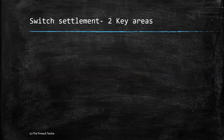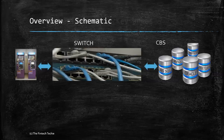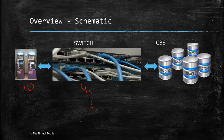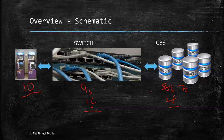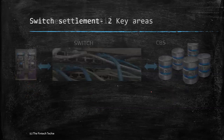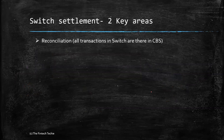What are the two key areas of reconciliation? In this schematic, let's assume there are 10 transactions done on the ATM. At the switch, there could be nine successes and one failure. At the CBS side, there might be eight successes and two failures, or only seven successes — maybe one never reached the switch or the core banking. So it's important that we reconcile what happened at the ATM, at the switch, and at the CBS. In the perfect scenario, all of them should match, but obviously there could be various scenarios where transaction counts may not match.